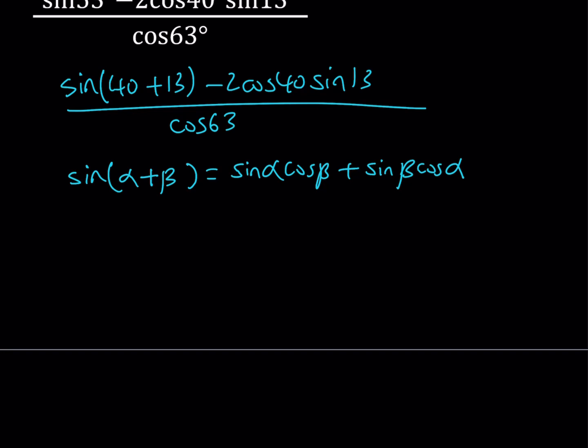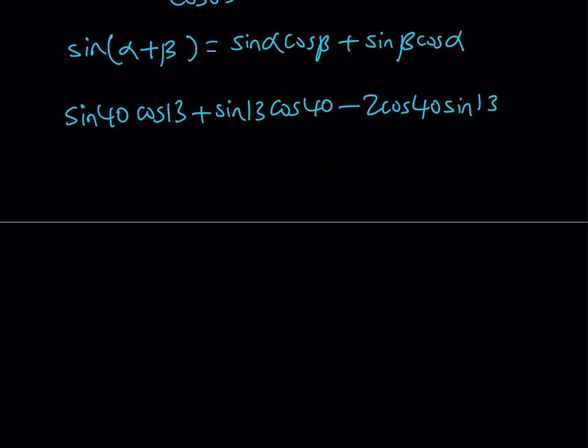So if you apply the formula we get sine of 40 degrees multiplied by cosine 13 degrees plus sine of 13 degrees multiplied by cosine of 40 degrees. And then from that we're going to subtract 2 times cosine 40 degrees multiplied by sine 13 degrees, and that is going to be divided by cosine of 63 degrees.